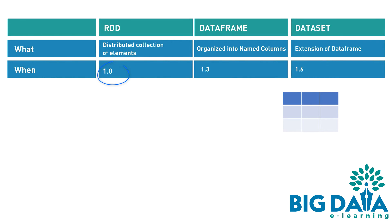Two: RDD is a low-level abstraction that was introduced in Apache Spark 1.0 release itself. Whereas the DataFrame was introduced in the 1.3 release, and DataSet abstraction was released in the 1.6 release.